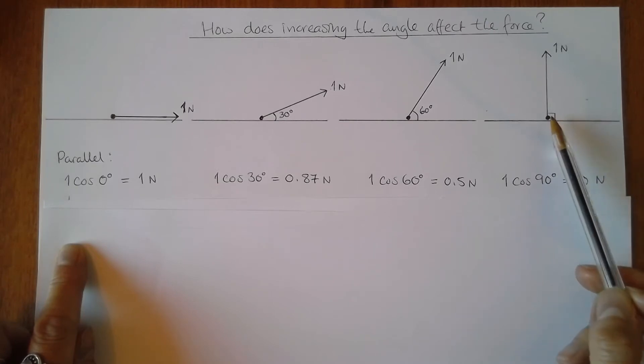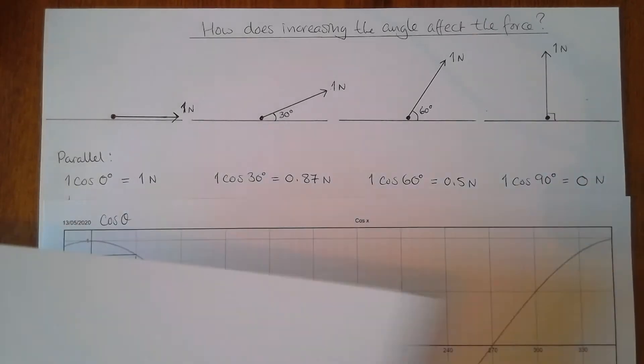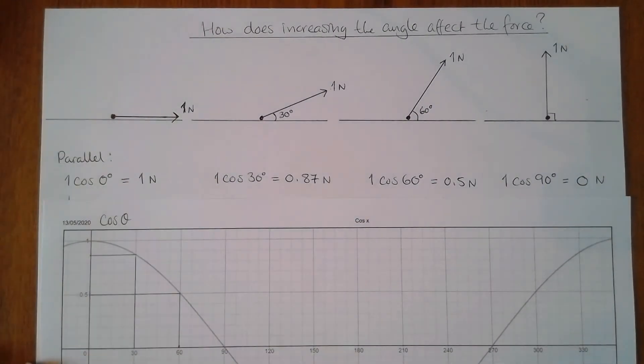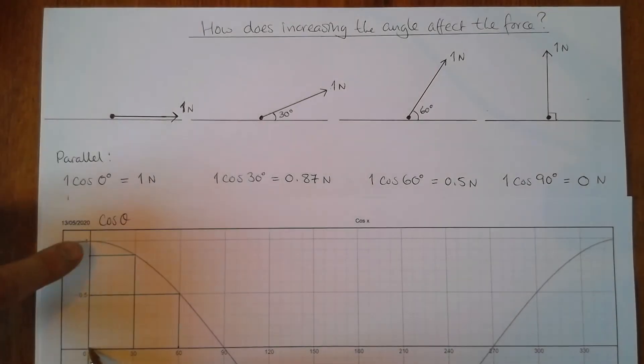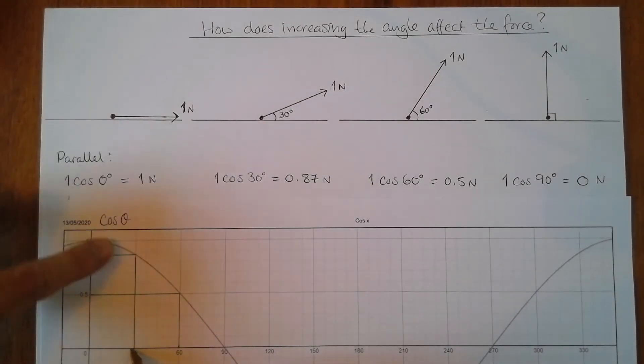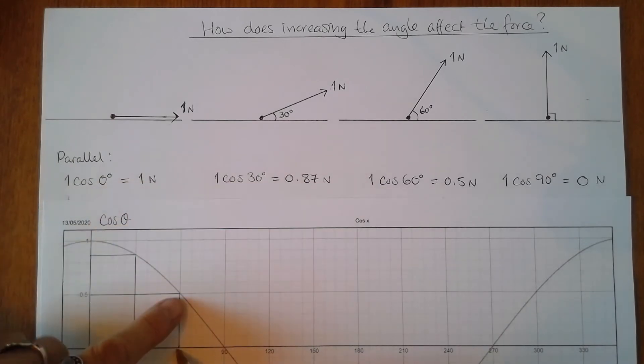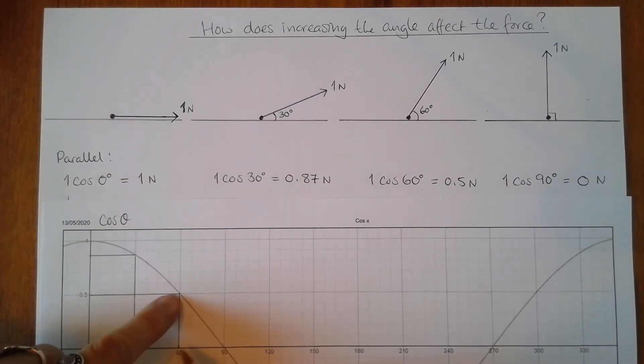Looking at the graph of cos theta, I've got cos of zero is equal to one, cos of 30 is equal to 0.87, cos of 60 is equal to 0.5, and cos of 90 is equal to zero.